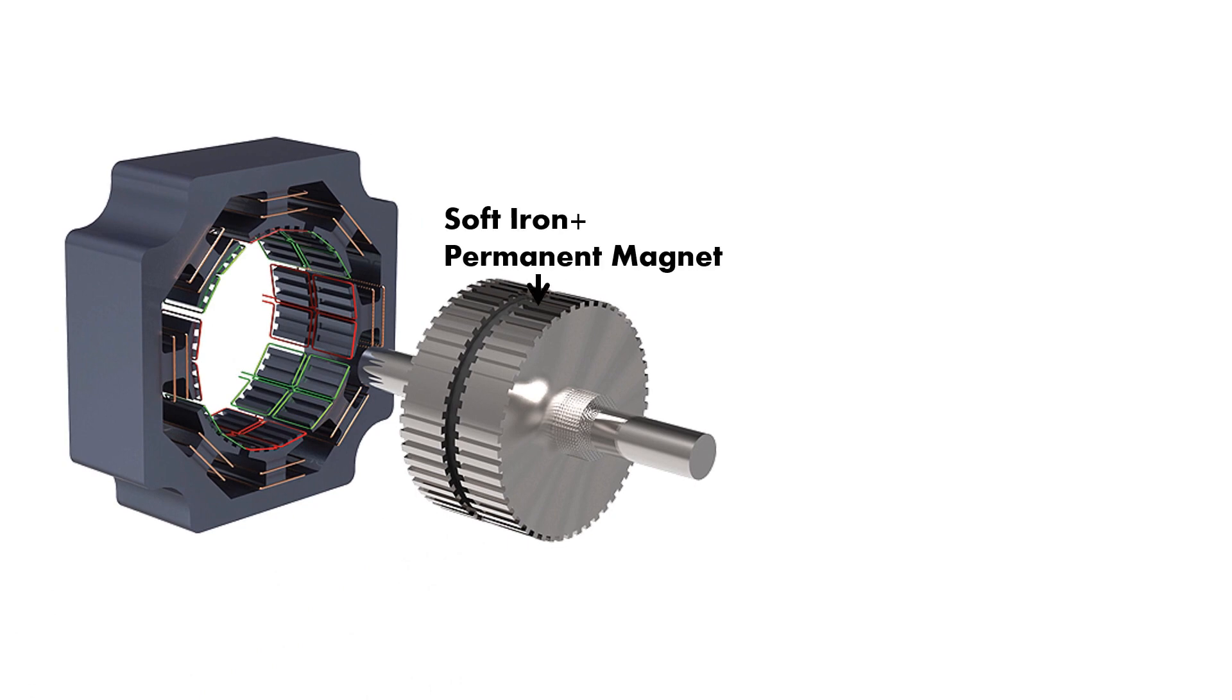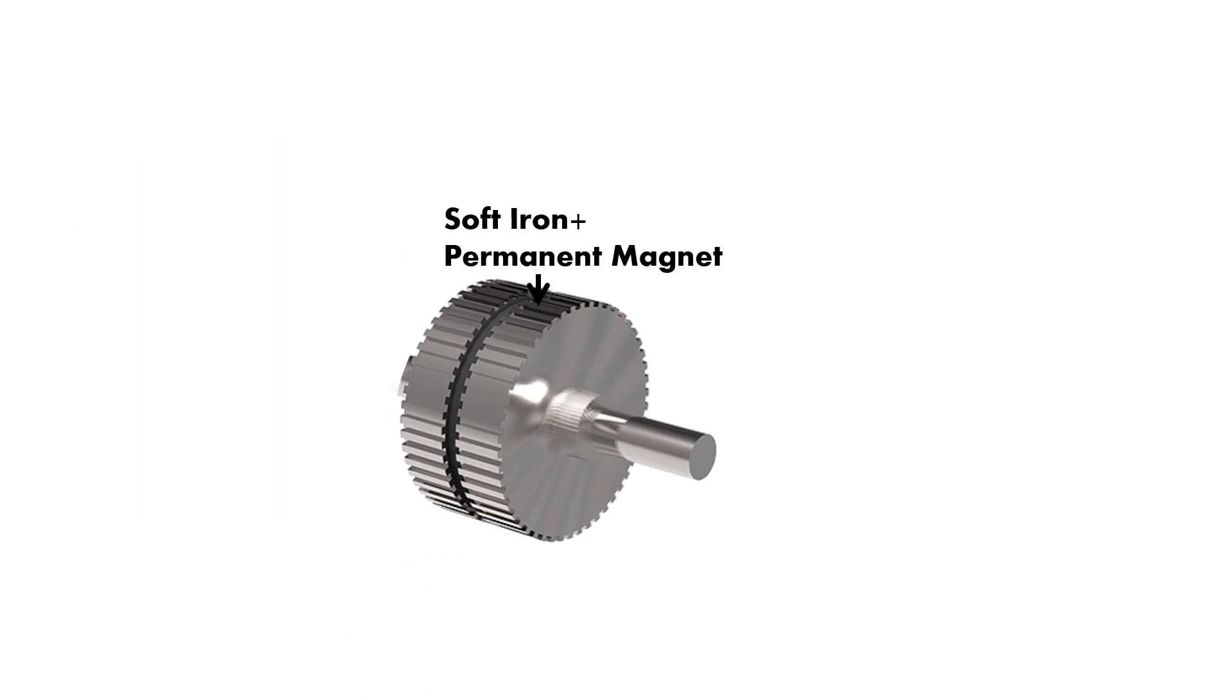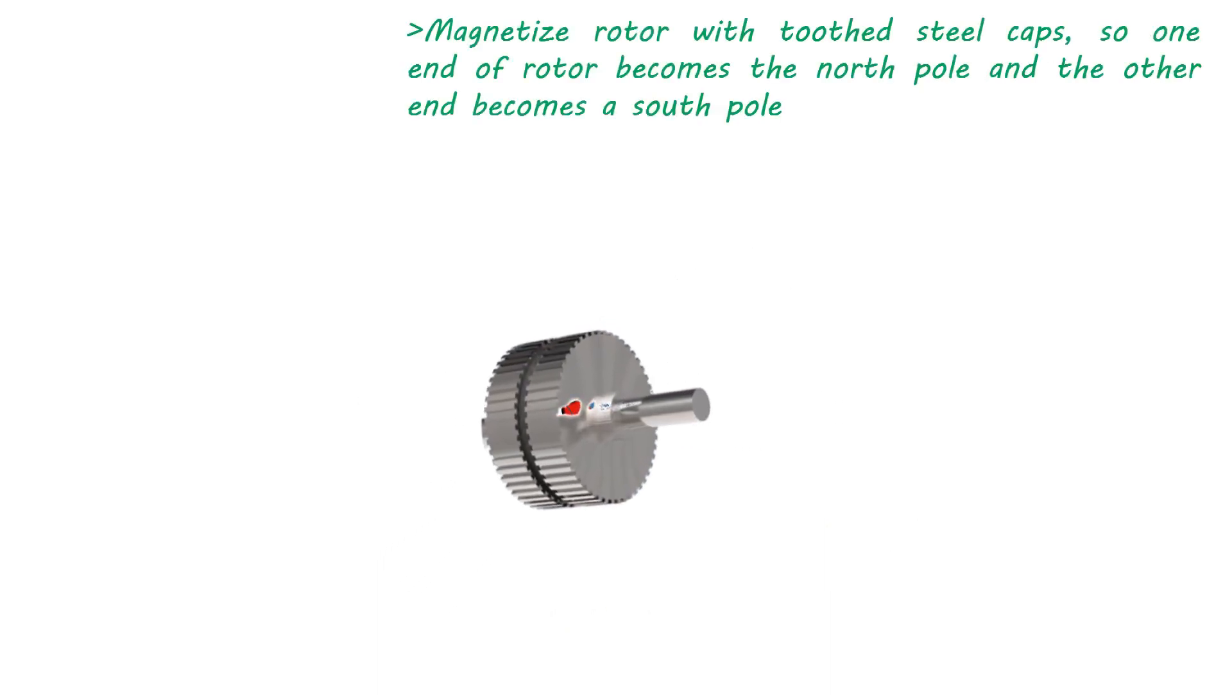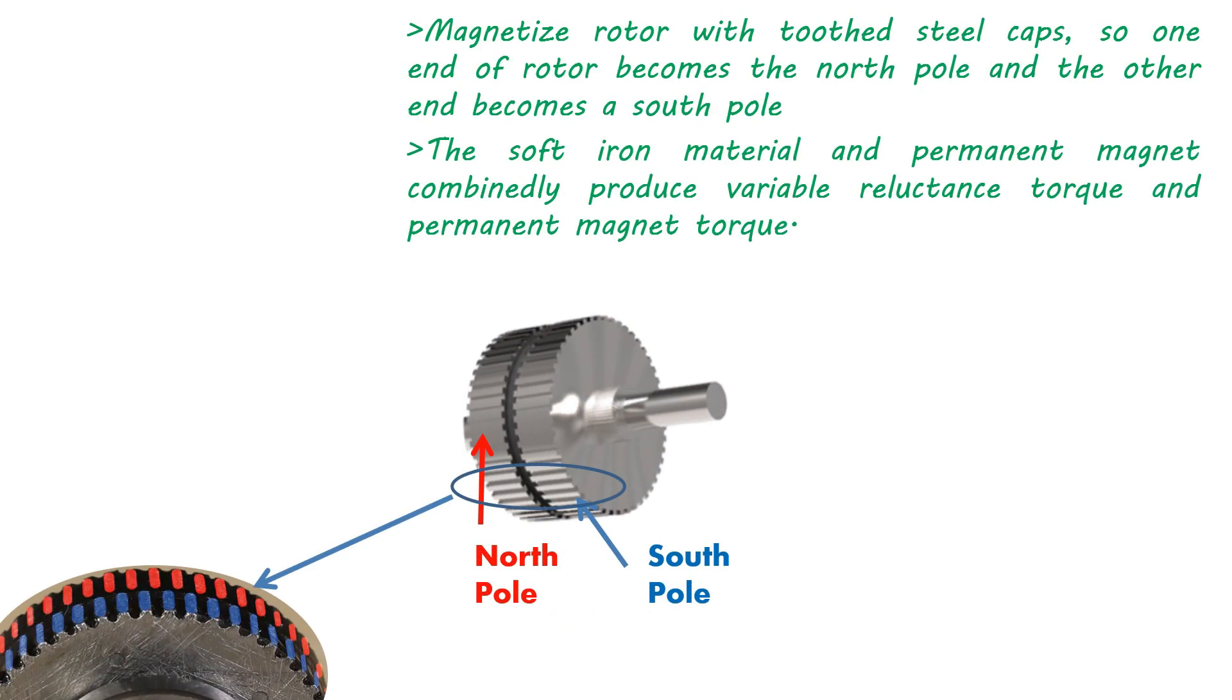The permanent magnet and soft iron material are used to develop the rotor of this machine. The rotor is made of an axially polarized magnet inside and toothed steel caps are covered at the outer side of the magnet. The toothed steel cap connected to the north pole of the permanent magnet forms north pole, and the toothed steel cap connected to the south pole forms south pole. The teeth of the rotor south pole and north pole are unaligned.